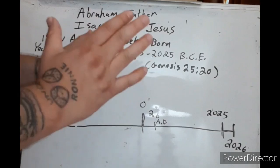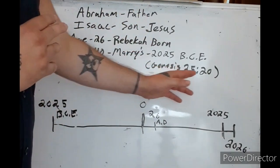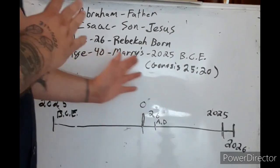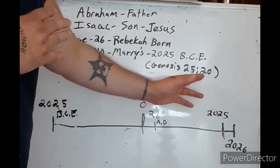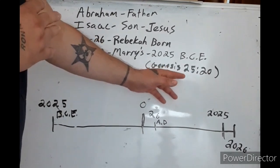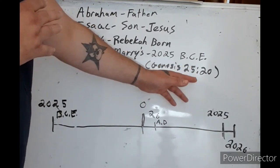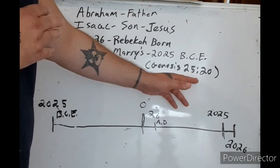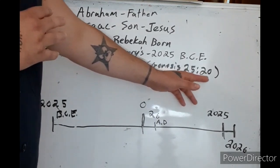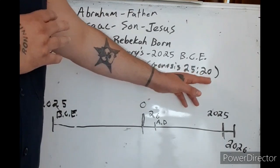Now Genesis chapter 25 verse 20 is when it talks about their marriage, and 25:20 is obviously 2025 backwards. And 25:20 is exactly seven Hebrew years—360 days in a Hebrew year, 360 times seven is 2520.